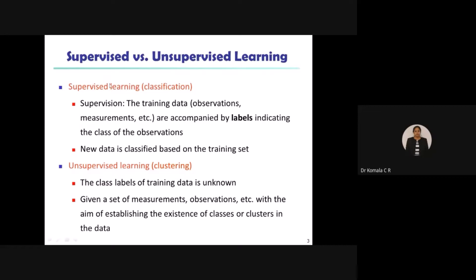The difference between classification and clustering: in clustering, the class labels of training data are unknown. In both cases we train the data — doing observations and measurements, picking samples from a large database. While doing training, if labels are allocated, we call the technique classification. If the labels are unknown, we call the method clustering. So training done with labeling is supervised learning, also known as classification.